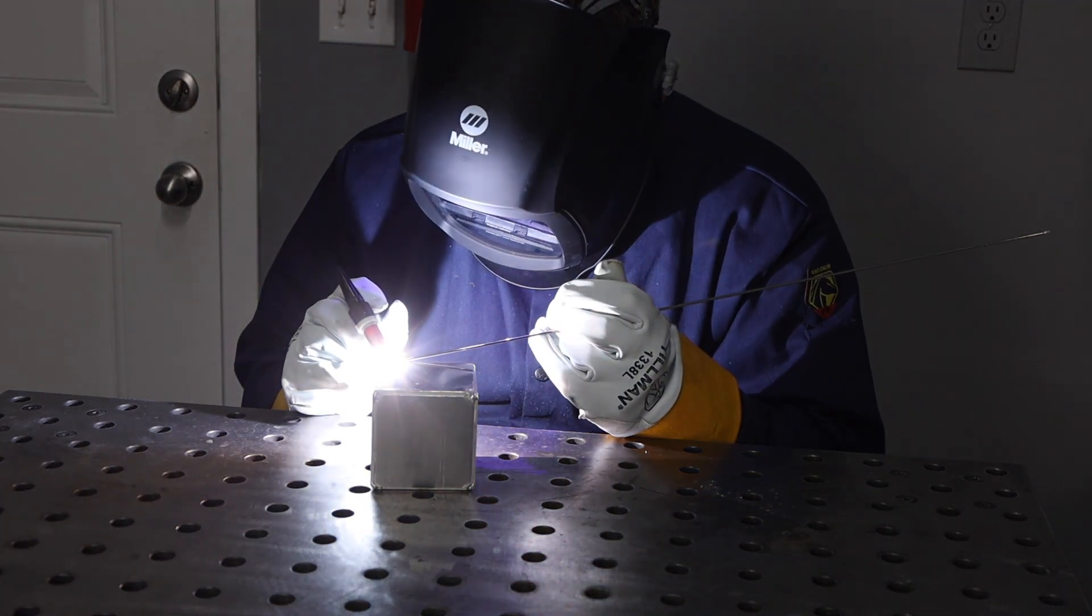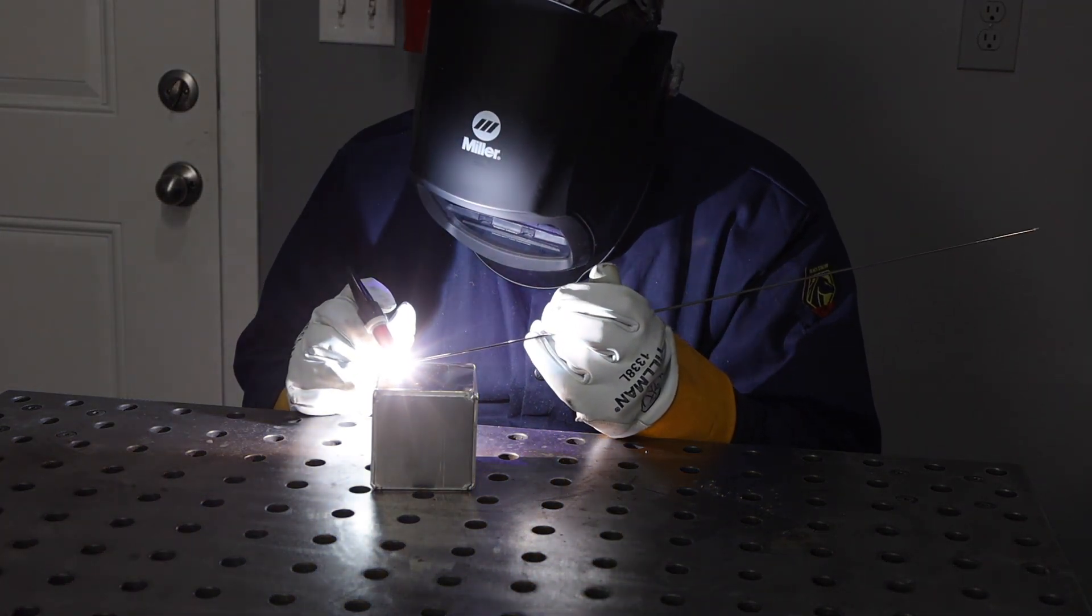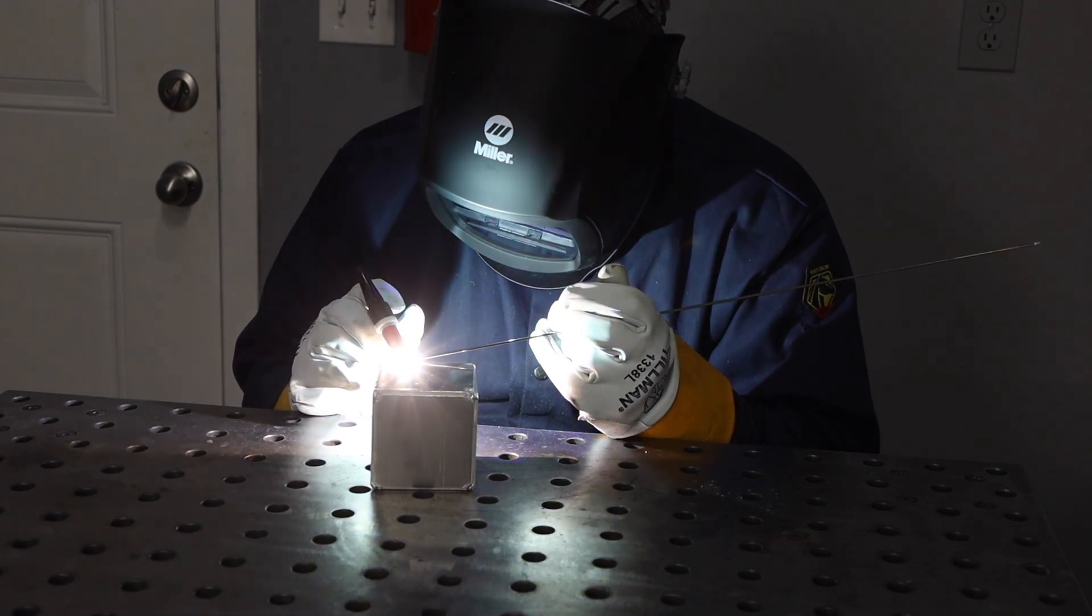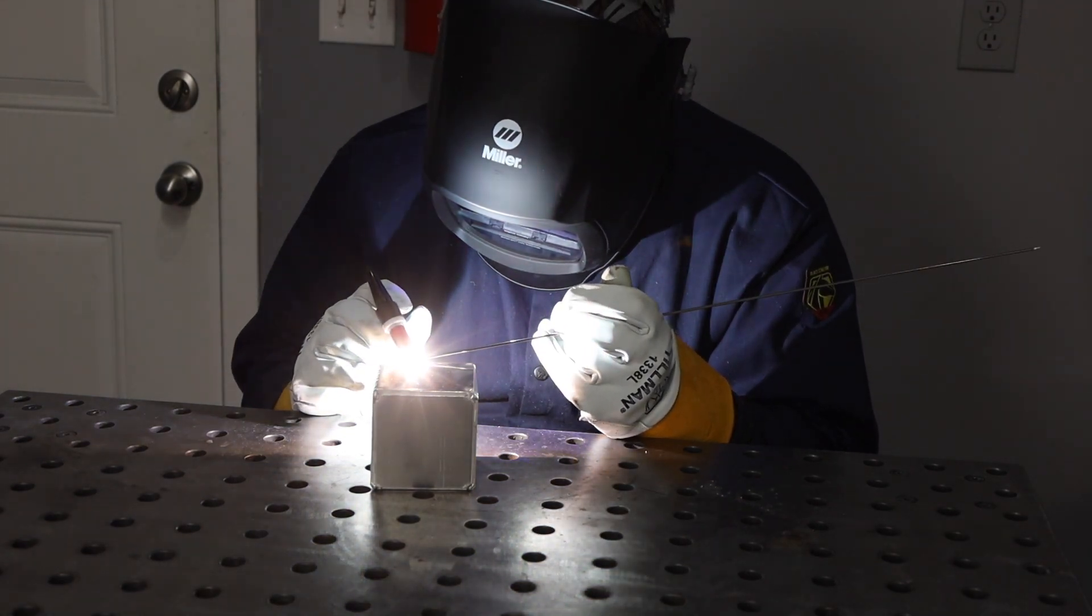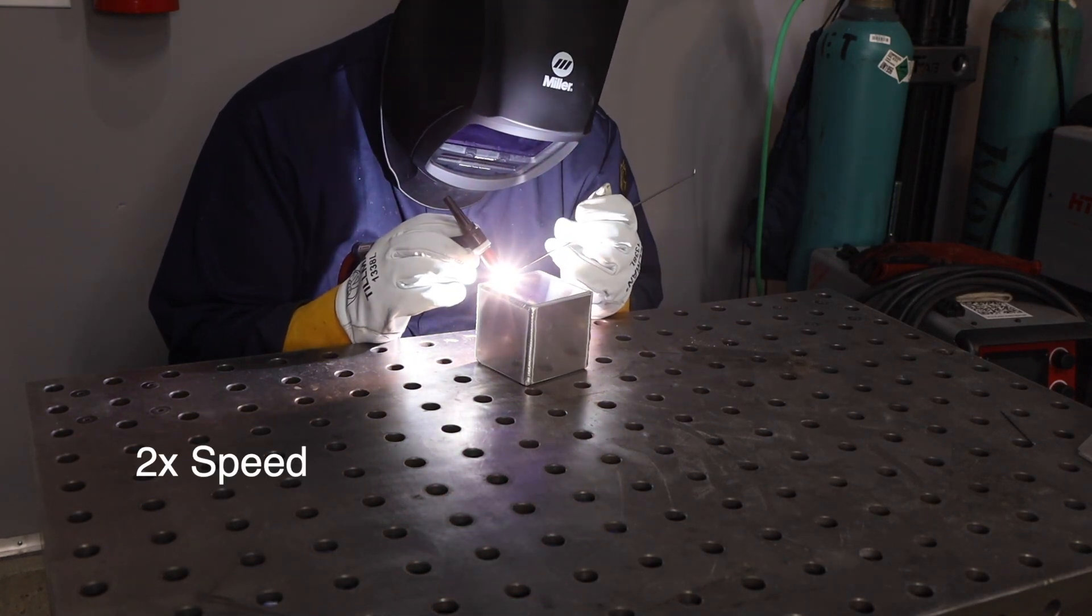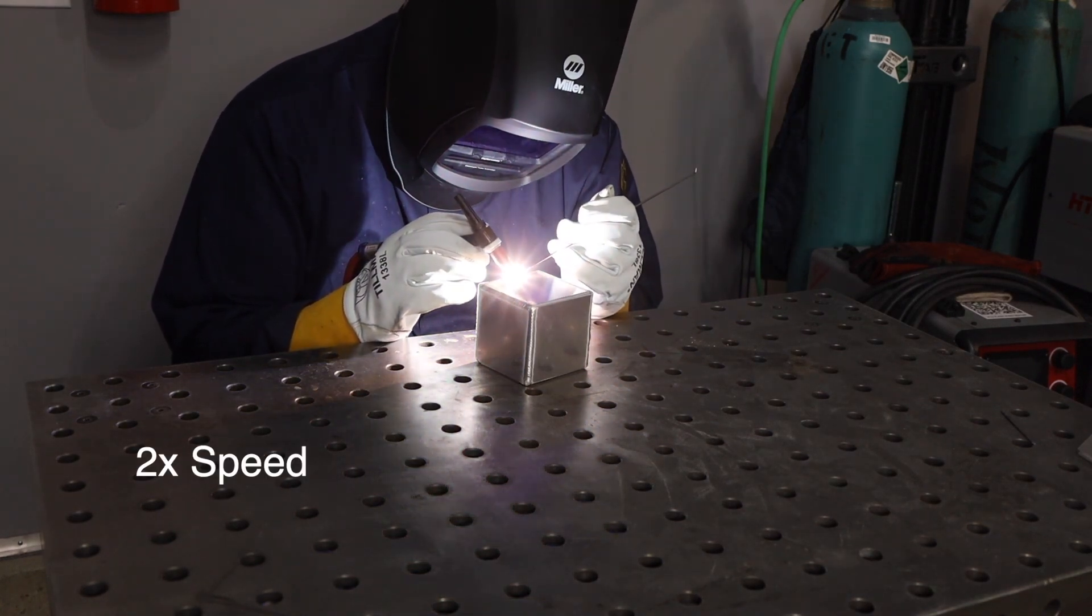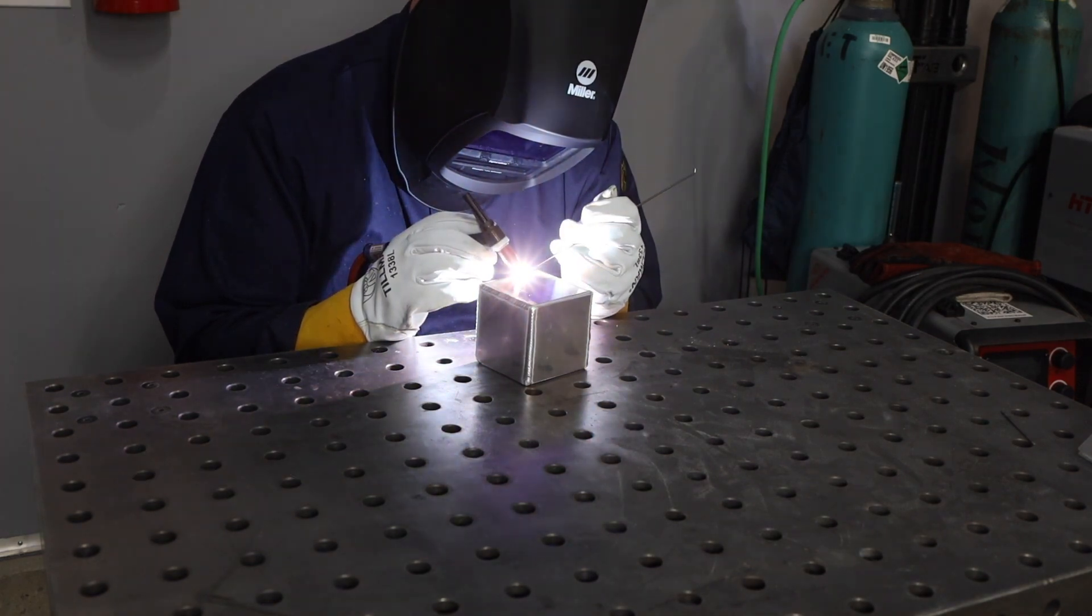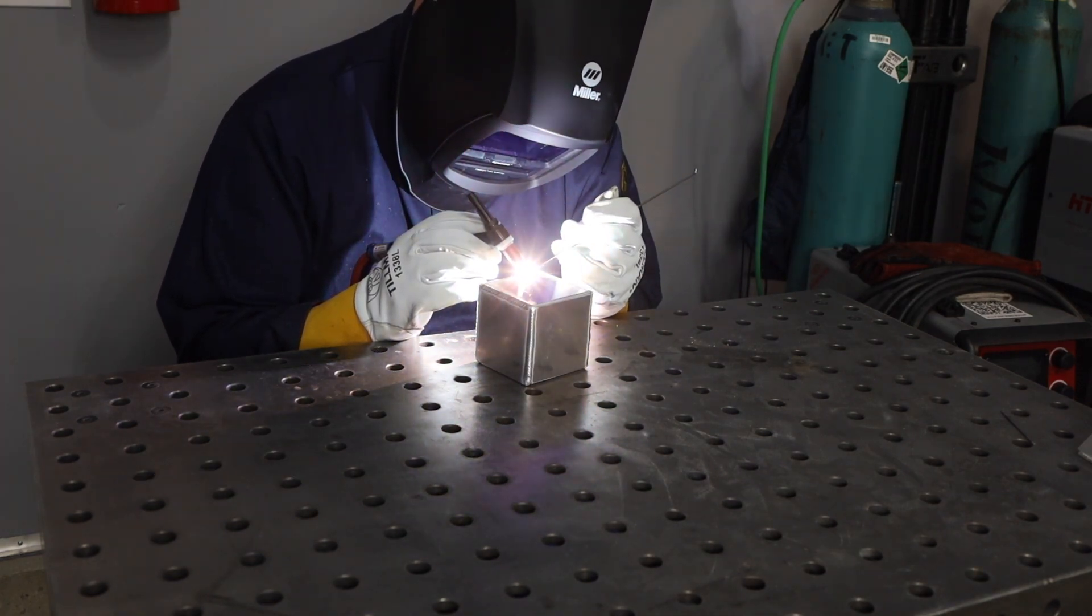Now as I run these outside corner joints, there are a few things to keep in mind. One is I want to make sure that my arc length is pretty short so I'm down in that joint, but not so far that I'm dipping my tungsten. Now as I run along here, I'm also maintaining a good angle where I'm coming in 45 degrees right into that joint and then I'm also making sure that my filler metal is feeding directly right into the front leading edge of that puddle all the way along on each of these joints and they're coming out pretty well.